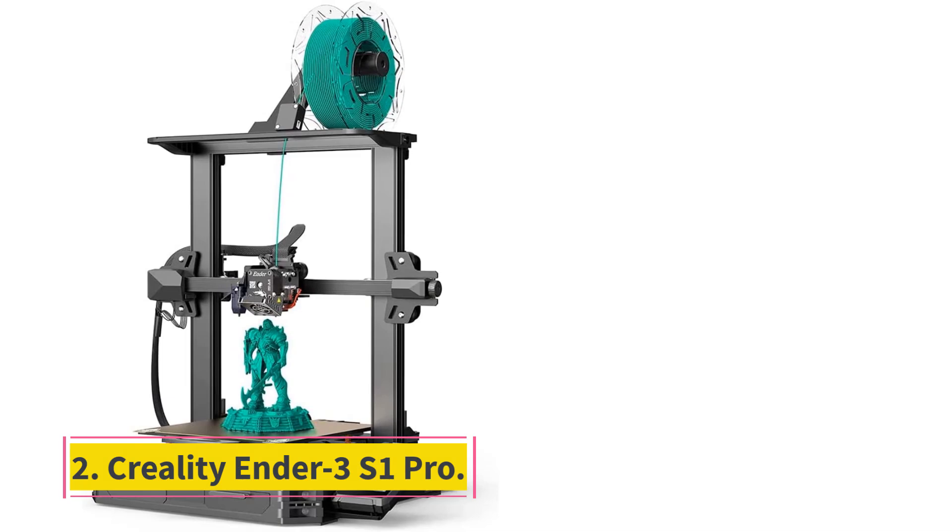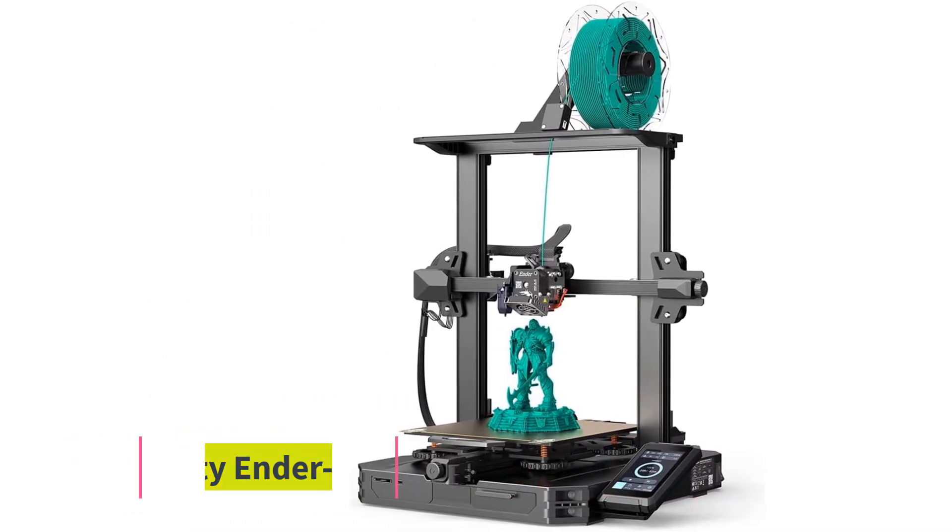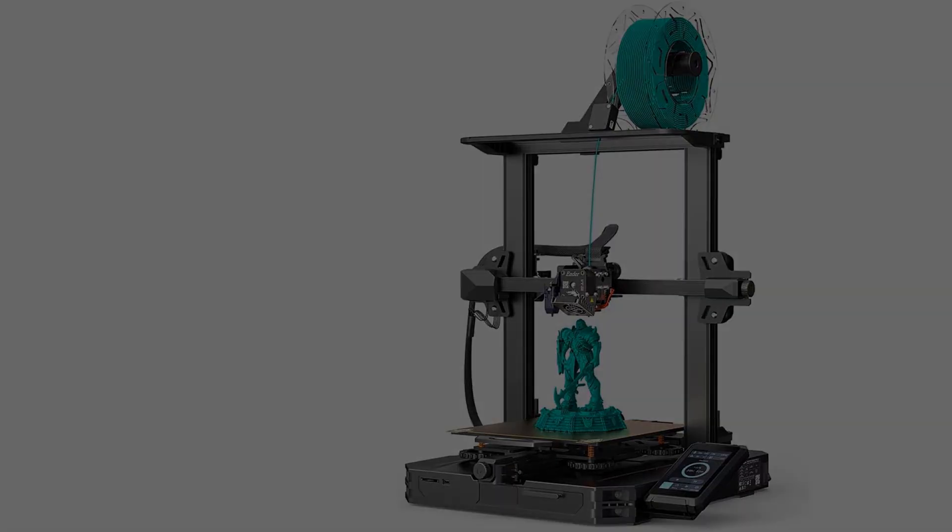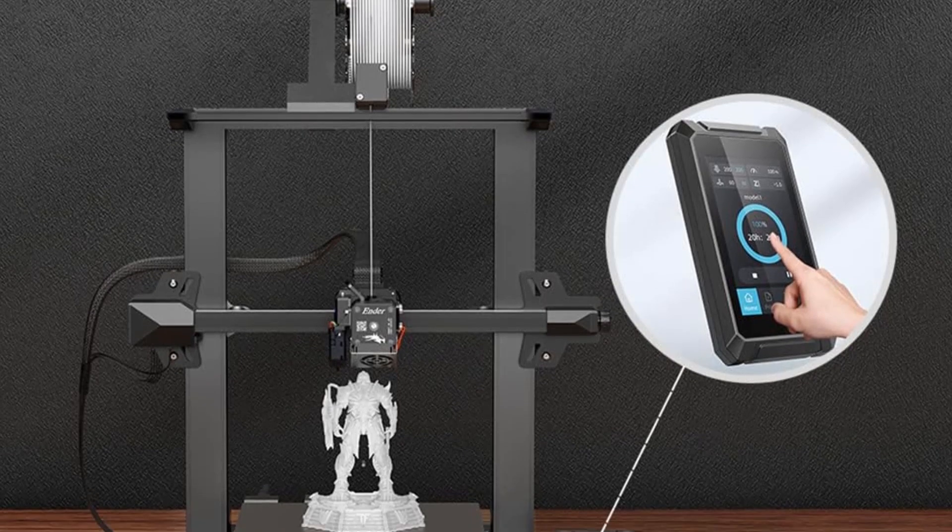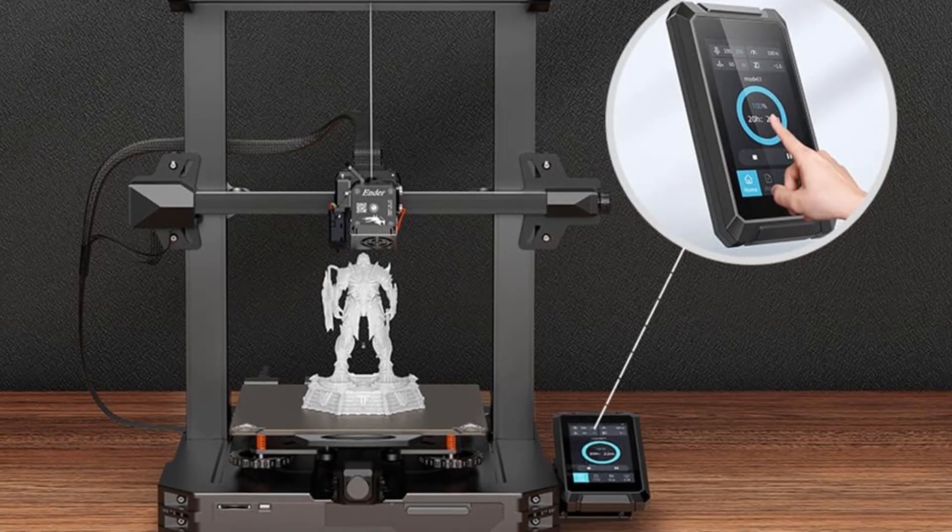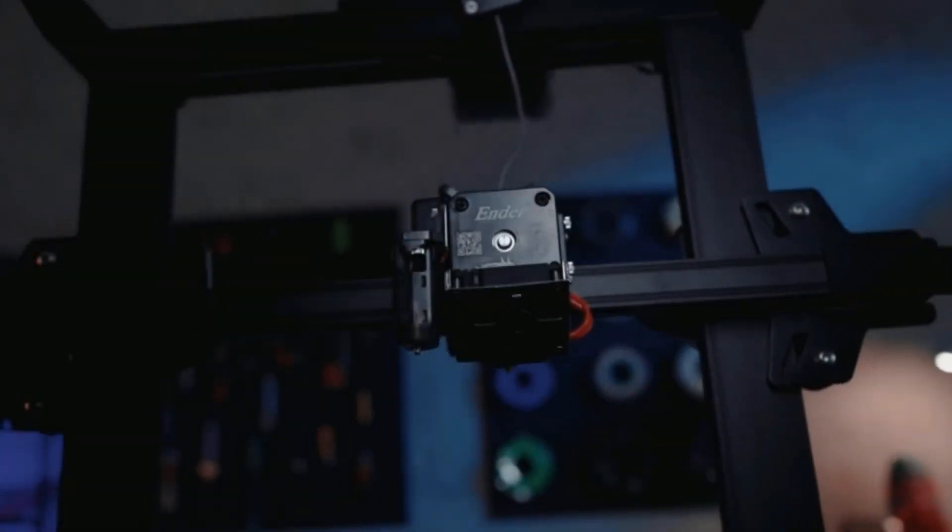Number 2: Creality Ender 3 S1 Pro. The Creality Ender 3 S1 Pro provides good value in an open-frame 3D printer, offering a large print area for its price. Although the S1 Pro comes in kit form, it's largely pre-assembled, so it should be easy enough for even a non-techie to put together, and it produced quality prints in our testing.